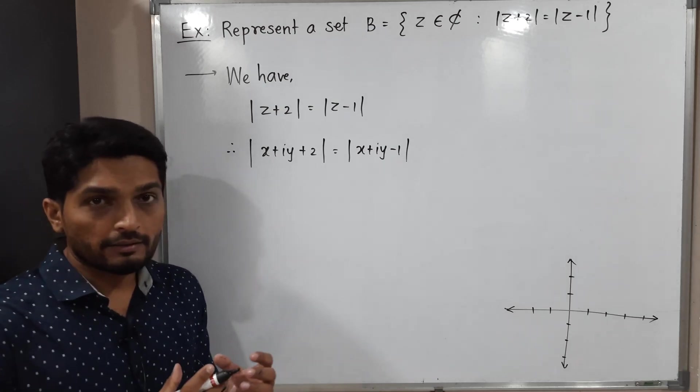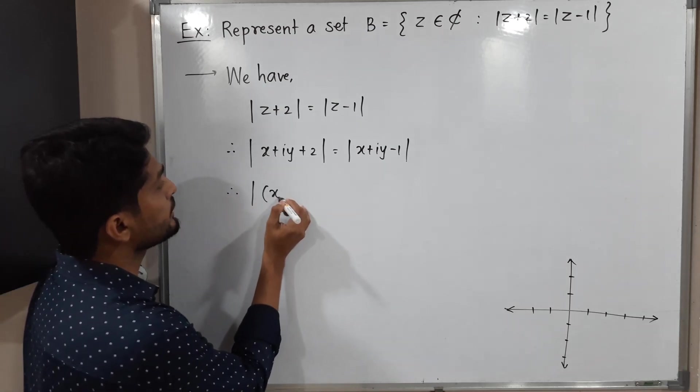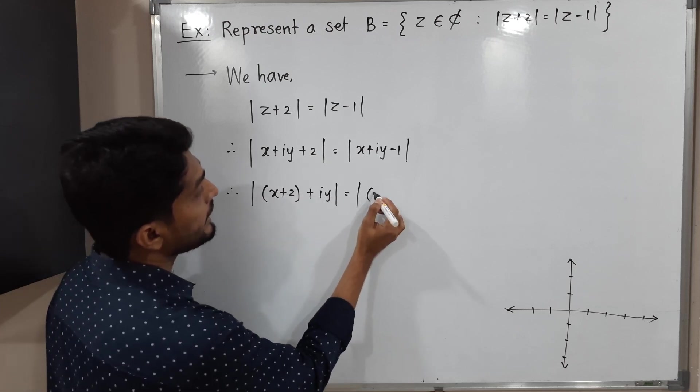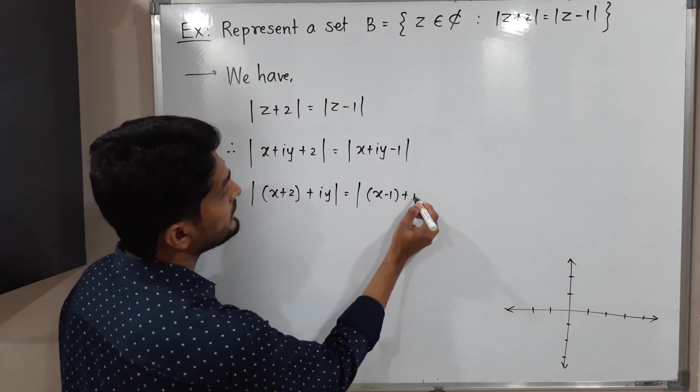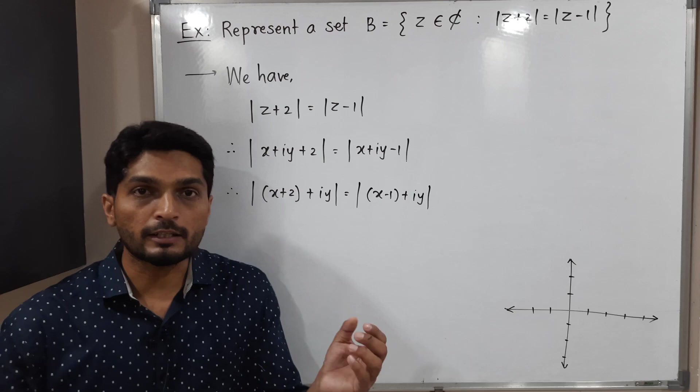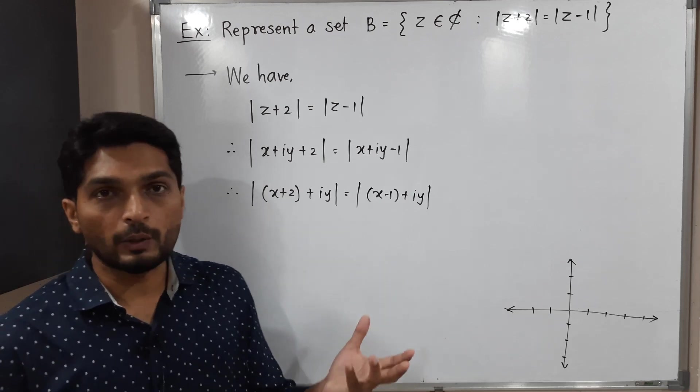Let us collect real parts and imaginary parts. So here real part is x plus 2 and the imaginary part is i y. Here the real part is x minus 1 and imaginary part is i y only. Imaginary parts that means a term having i as a multiple and real part that means without i.